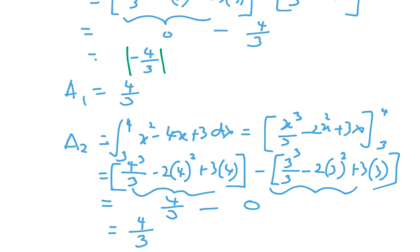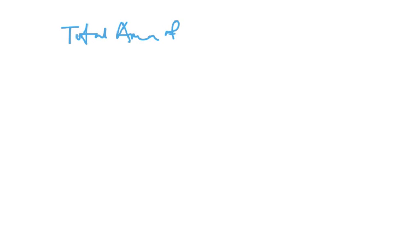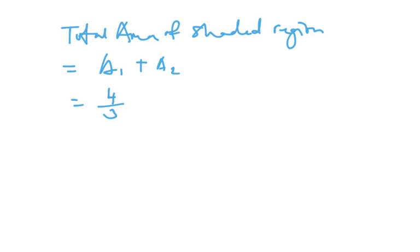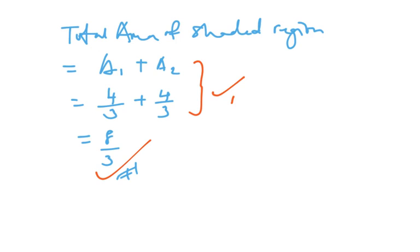Finally, you need to get the total shaded region. Total area equals Area 1 plus Area 2, which is 4 over 3 plus 4 over 3, giving a final answer of 8 over 3. Putting the two areas together earns 1 mark, and getting the correct final answer earns another mark.